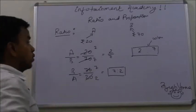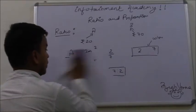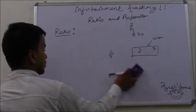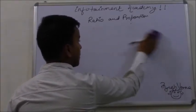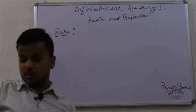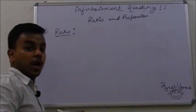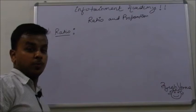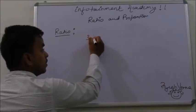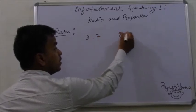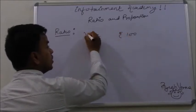So, moving on to a very simple problem. If a father wants to distribute among his two children rupees 100 in the ratio of 3 is to 7, then find the share of individual child.